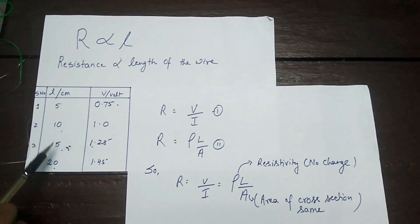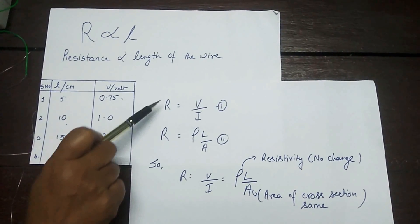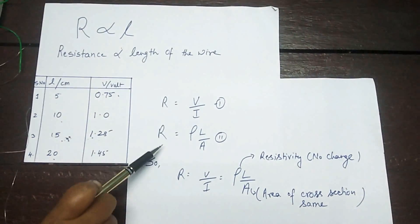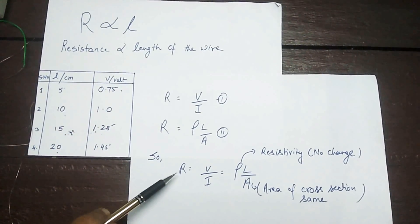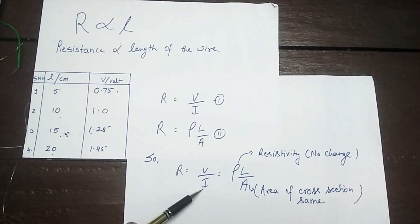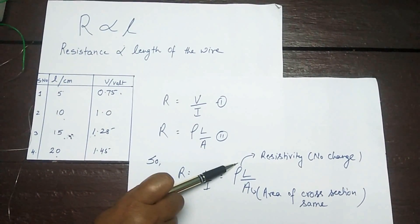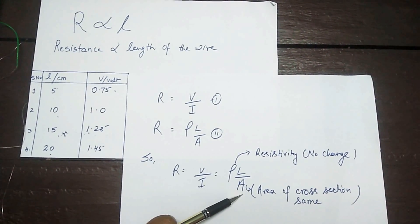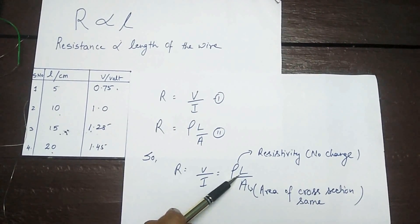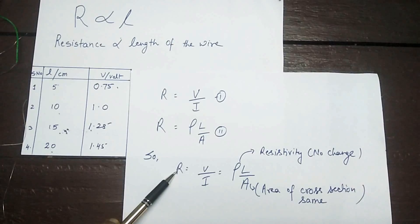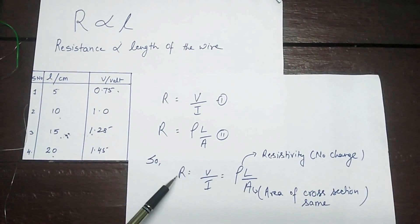You can observe that with the gradual increase in the length, there is an increase in the voltage on the voltmeter. Now, when we look at these relations, resistance is equal to voltage by current, and resistance is equal to resistivity into length by area of cross section. When we combine these two equations, we can write that R equals voltage by current, which equals rho L by A. Here, rho will be the same resistivity because I have taken nichrome wire of the same material, and the area of cross section will also be the same because I have taken the same thickness of the wire. So, we can say that when there is a change in L, voltage will change and R will also change. Since I have increased the length of the conductor, there was an increase in the voltage, and that will increase the resistance also.